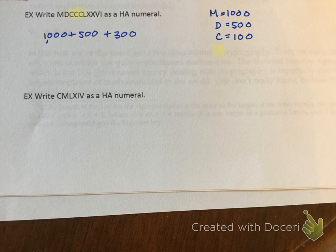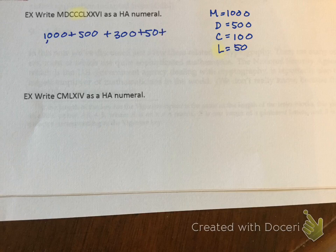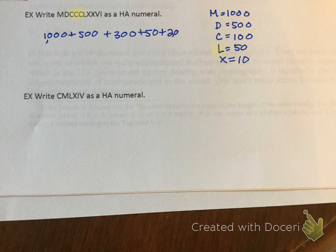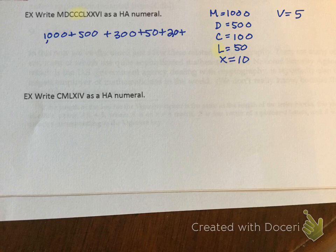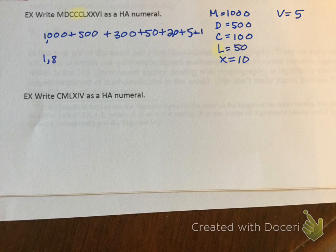L is equal to 50, and I only have one of those, so plus 50, and then I have two X's. X equals 10, so two X's stands for 20, and then I have one V. V is 5, so plus 5, and then finally plus 1. If I add all that together, I get 1,876.